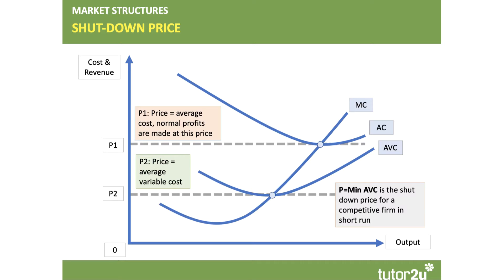At P2, that price is just sufficient at the point where MC cuts AVC — it's just enough for firms to cover their variable costs, and they will supply to the market in the short run provided that the price is greater than P2. Effectively, then, the marginal cost curve becomes the supply curve for a firm.